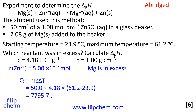The energy change is given by Q = mcΔT. M is the mass of the reaction mixture in this case. Because the reaction mixture has a density of 1 gram per centimeter cubed and a volume of 50 centimeters cubed, the mass of the reaction mixture is 50 grams. I have ignored the mass of the magnesium, but you could choose to include it. The energy change is 7,795.7 joules.